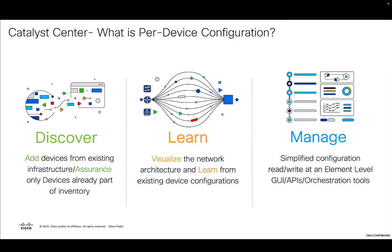Per device configuration is one of the latest features introduced in version 2379 of Catalyst Center, where we enable customers to add devices from their existing infrastructure. In this case, assurance only devices can be discovered and then we give users a way to learn the configurations and visualize them on the Catalyst Center UI, similar to what you would see on the 9800 web UI. We also give ways to manage the configurations — for example, if a user wants to read, modify, delete certain configs, or add new configurations, we give users an ability to do that as well.